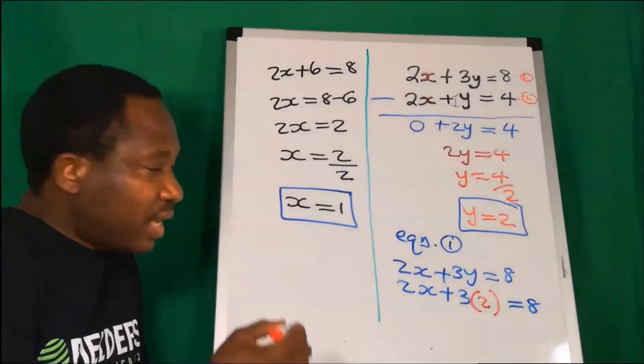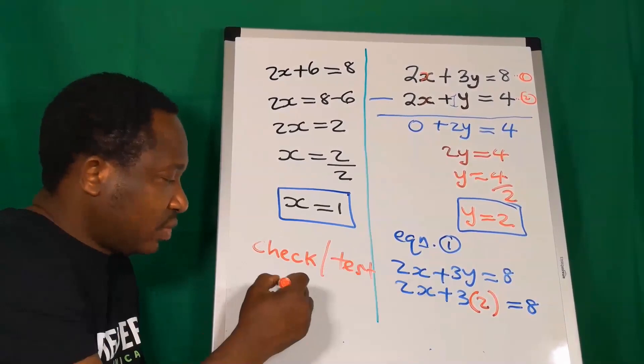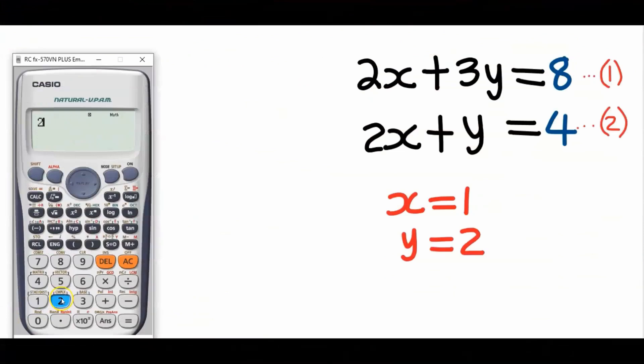How do I know if my answers were correct? The last step is that you should check and test for accuracy. Let's test for equation 1. 2x plus 3y. For x, we are going to put 1. For y, we are going to put 2. This gives us 8. Next, for equation 2, we have 2x plus y. And for the value of x, we have 1. And this gives us 4.